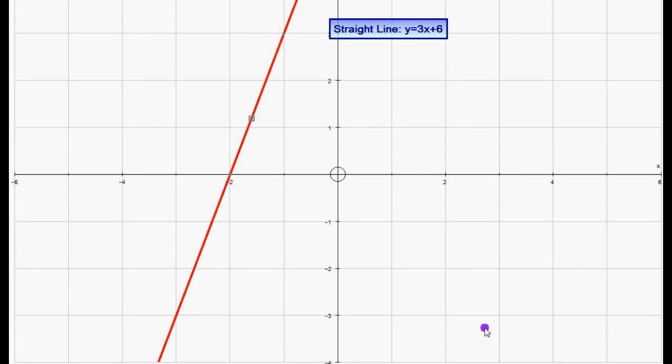Right, here we're going to investigate the relationship between a straight line and the normal to that straight line. A normal is a line that's at right angle to the line that we have.